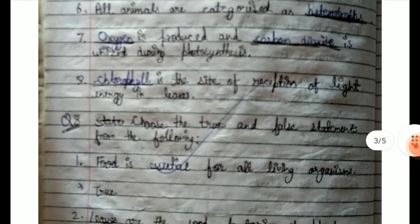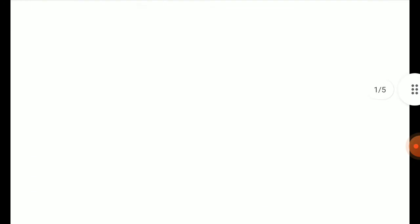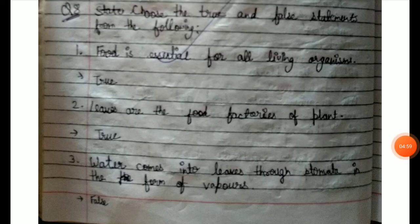True and False statements. Food is essential for all living organisms — true, it is very necessary. Leaves are the food factories of plants — true. Water comes into leaves through stomata in the form of water vapors — false, because water comes from the roots through the stem, not through stomata in vapor form.